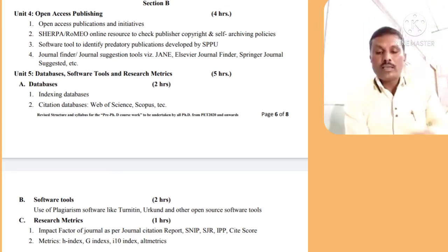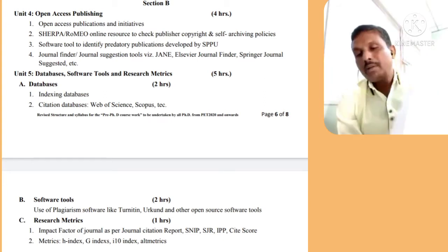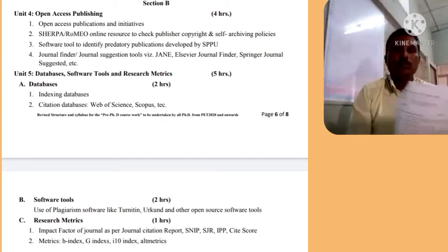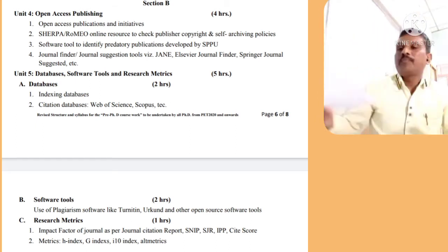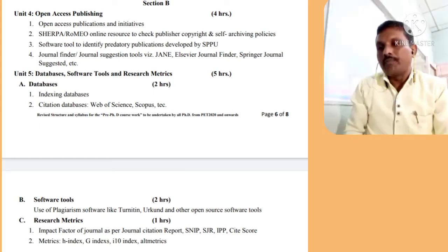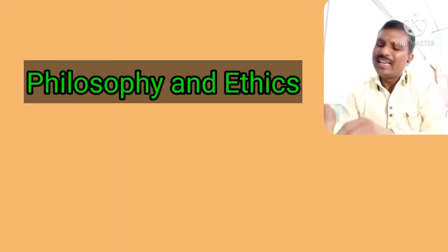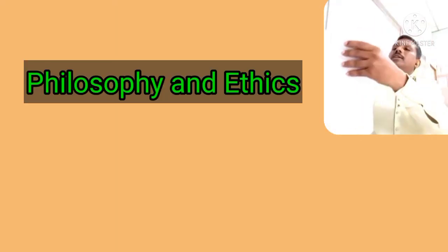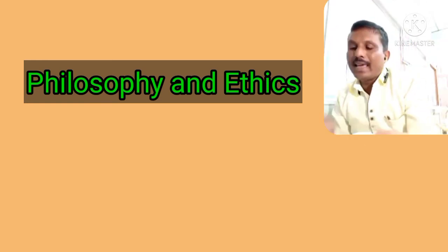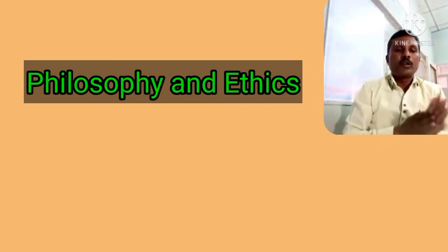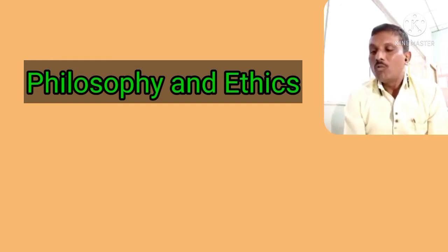So that was the syllabus of the paper Research and Publication Ethics. If you don't have the syllabus, it will be forwarded to you. Now let us start with Unit 1. It's quite general, but we are supposed to learn it. The first part is Philosophy and Ethics — we have to understand what actually is philosophy and what is ethics.